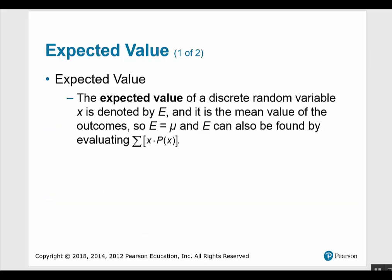The expected value of a discrete random variable x is denoted by capital E, and it is the mean value of the outcomes. Capital E equals mu, and E can be found using the formula for the population mean for the distribution, which is the summation of each x times its probability.